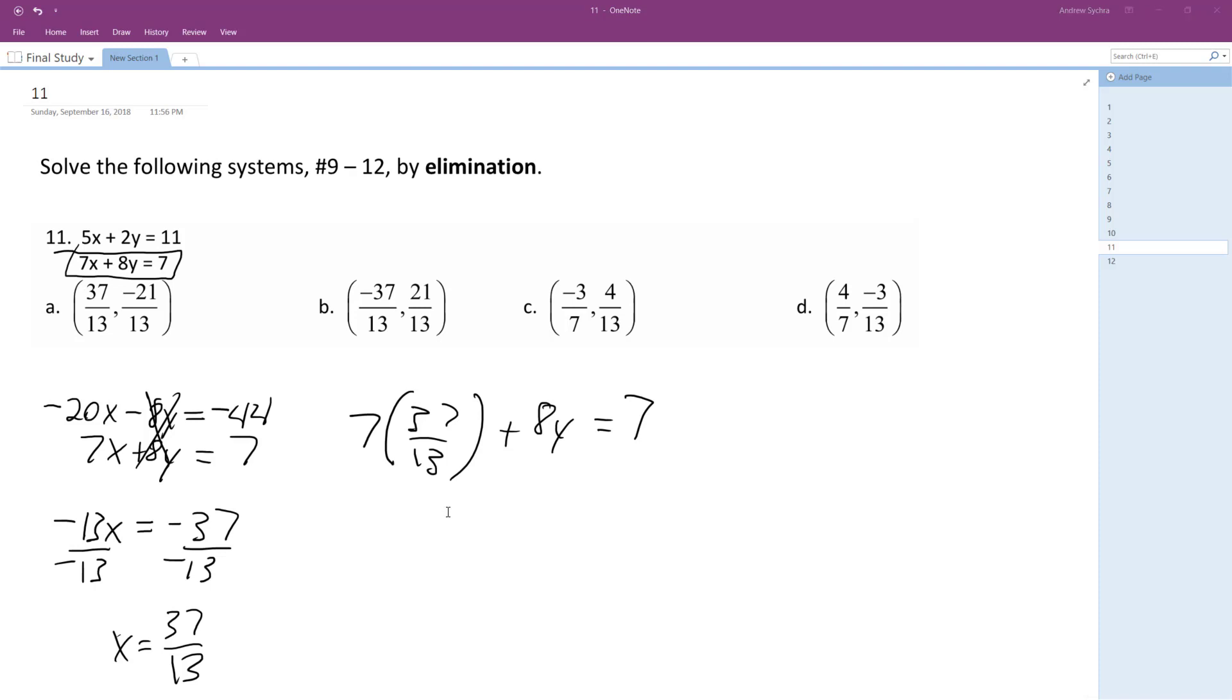So I get 259 over 13 plus 8y equals 7. So 8y is equal to 7 minus 259 over 13.